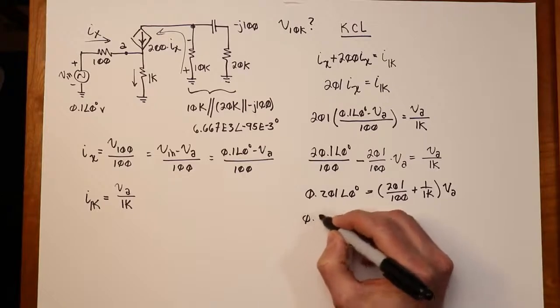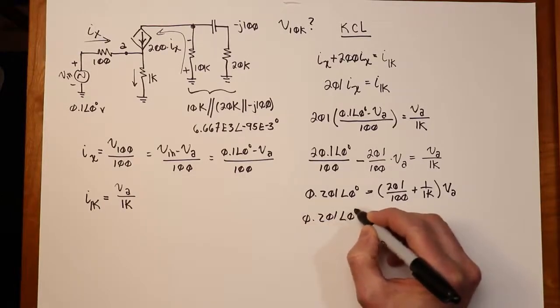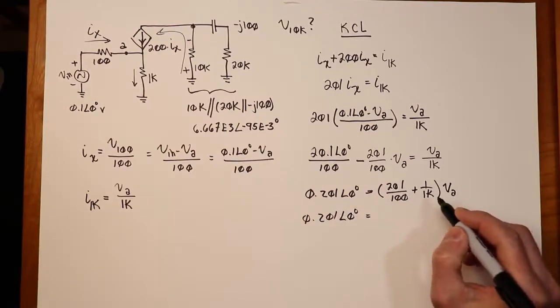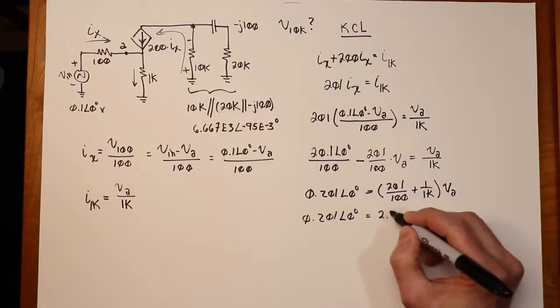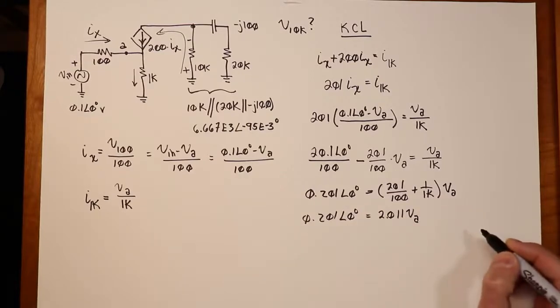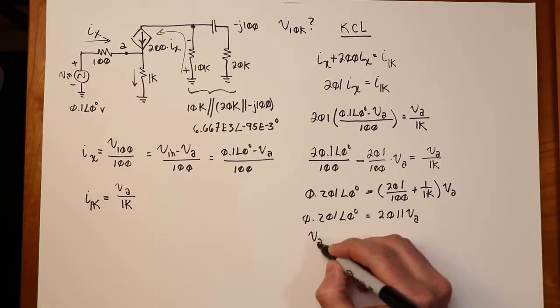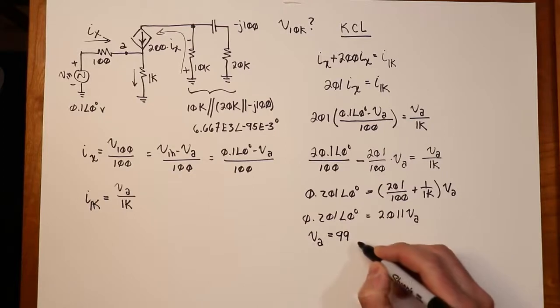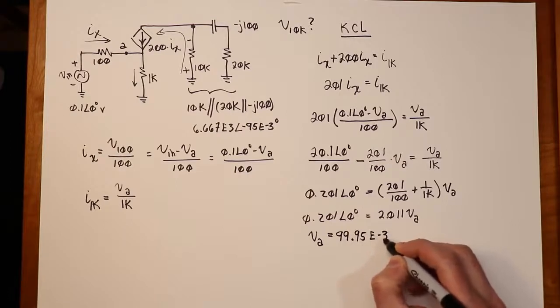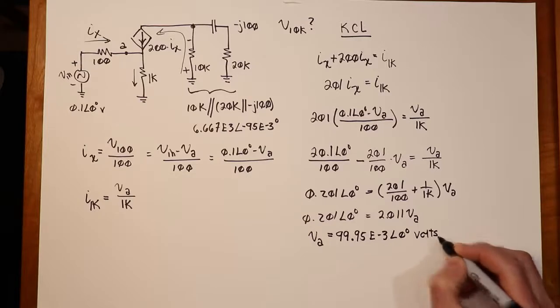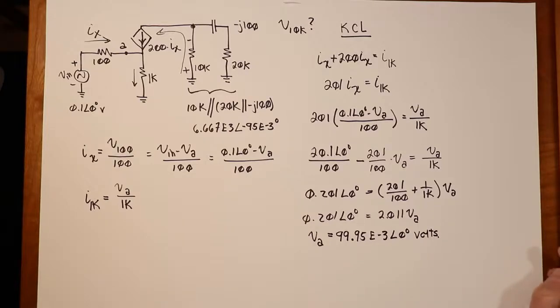So this turns into 2.01 plus a mil, basically, which is 2.011 times V A. So that we can just solve, find out what V A is. And that turns out to be just under 100 millivolts because of that little bit. So we've got 99.95, basically, E minus 3 at an angle of 0 volts. That's what V A is.